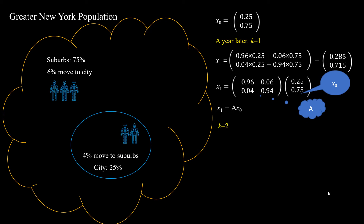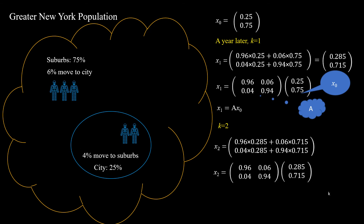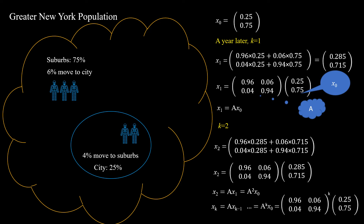Now we get x1 equals A times x0. Following the same rule, we can get x2, and so forth — we can conclude that xk will be equal to A to the power of k times x0.